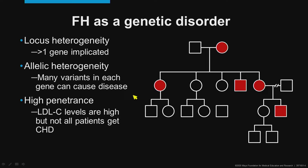There is allelic heterogeneity, which means that many genetic variants in each gene can cause the disease. Typically FH is penetrant, meaning most patients who have a pathogenic variant will have high LDL levels, but not all patients may get coronary heart disease.